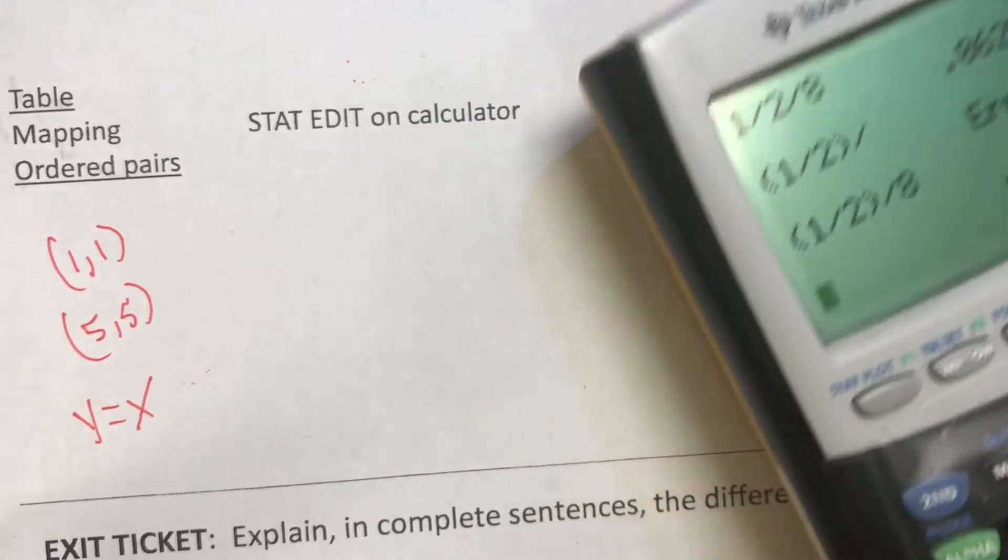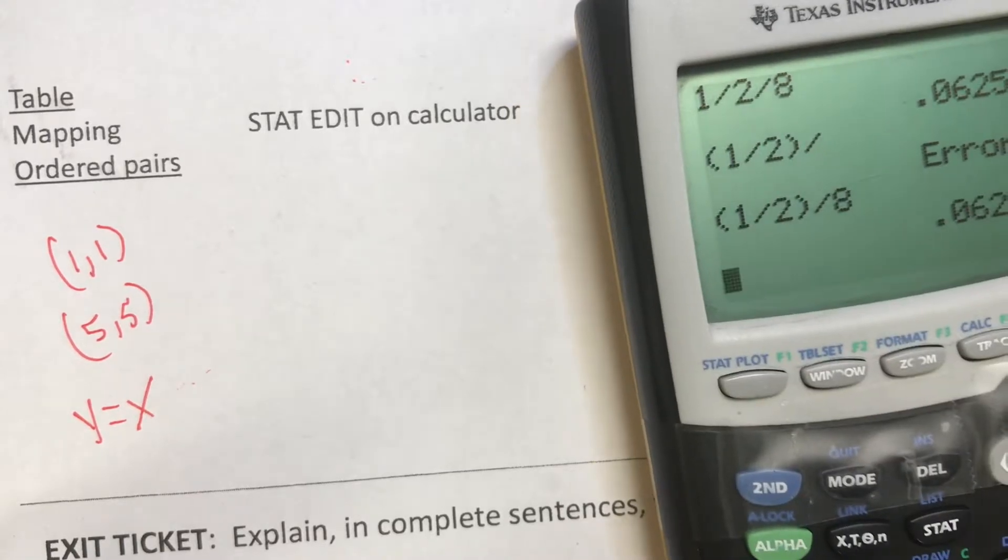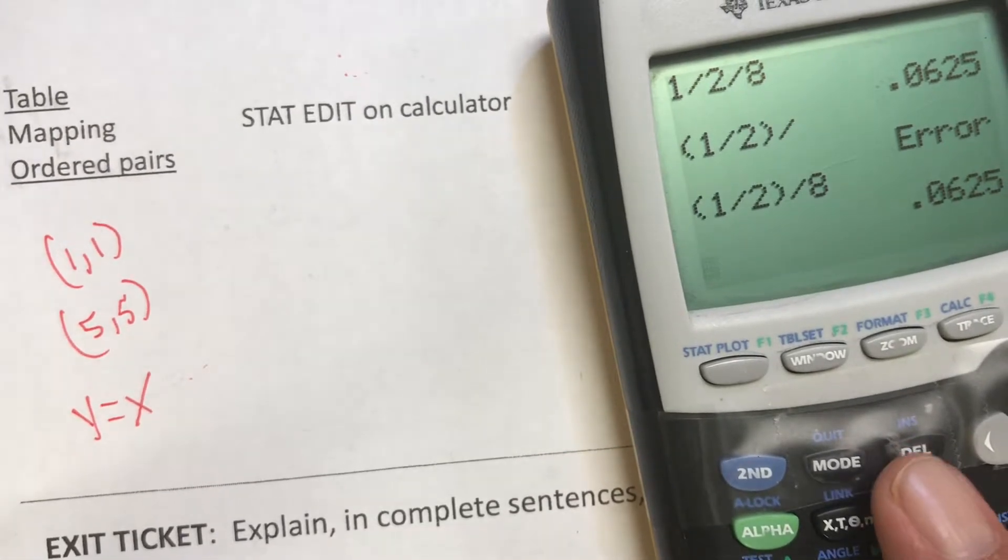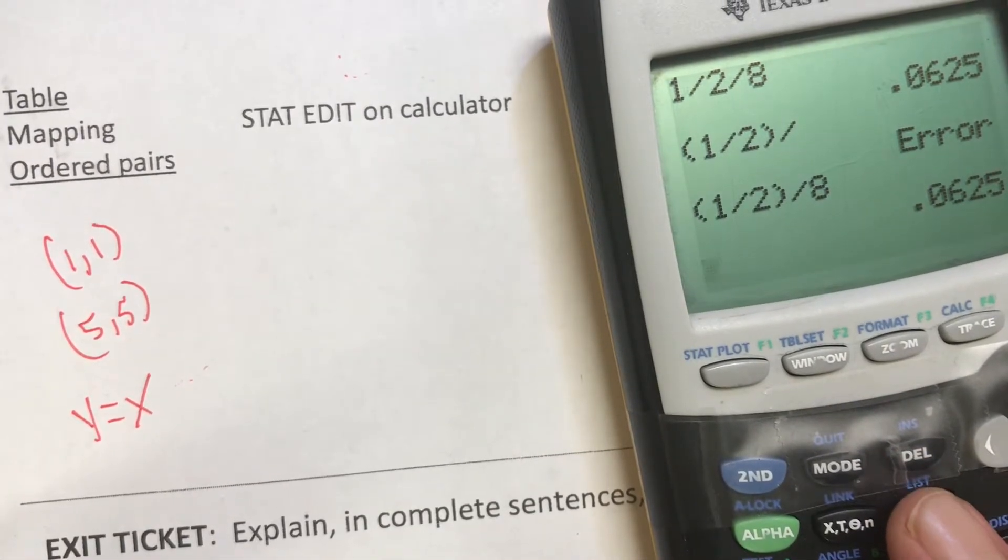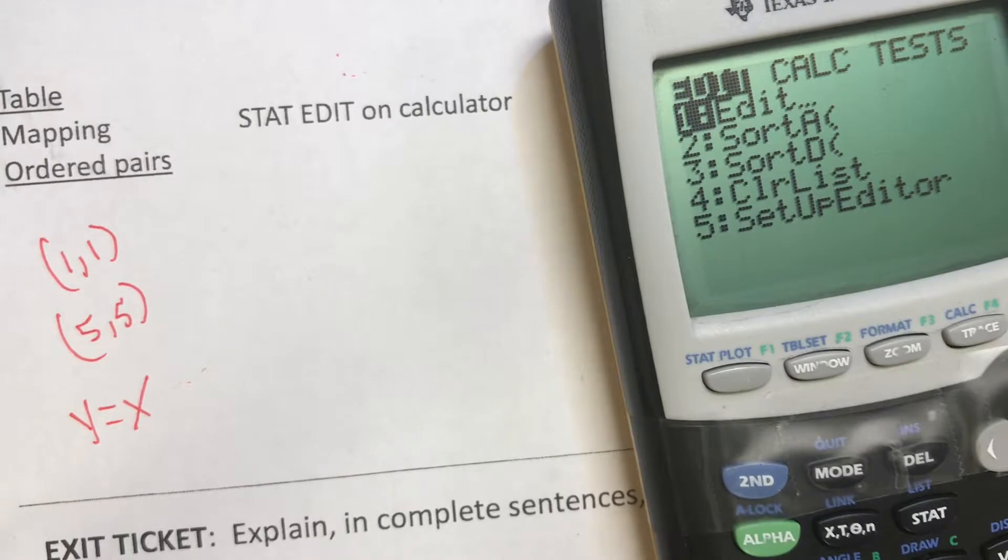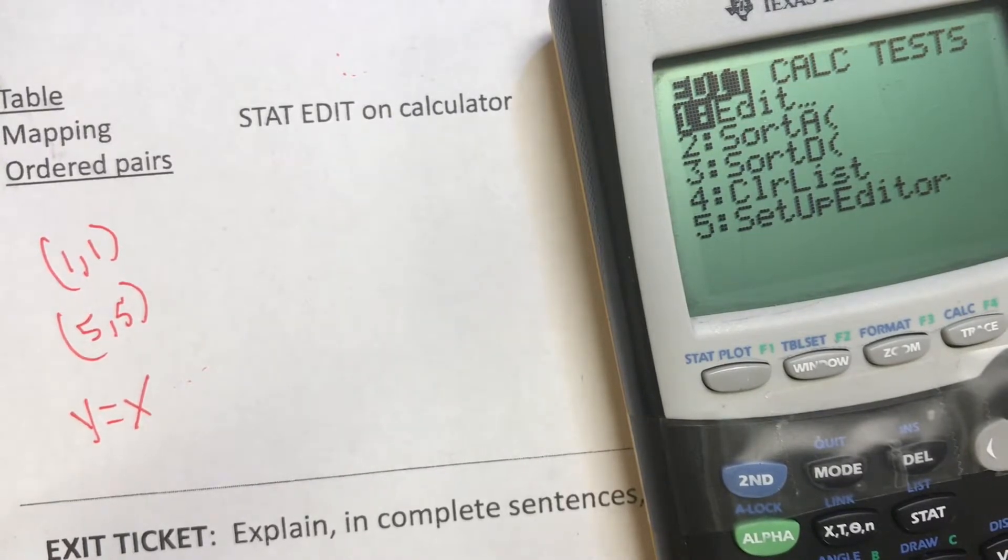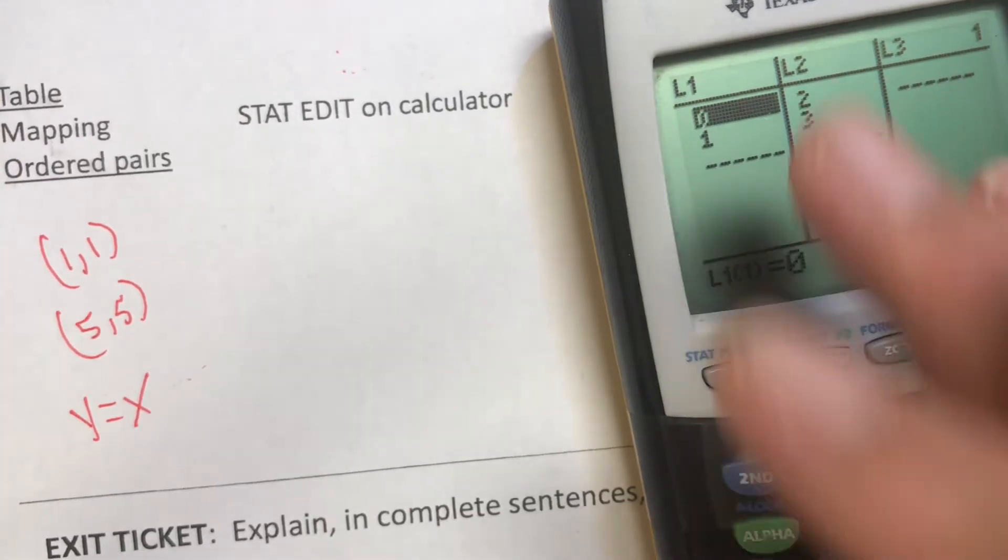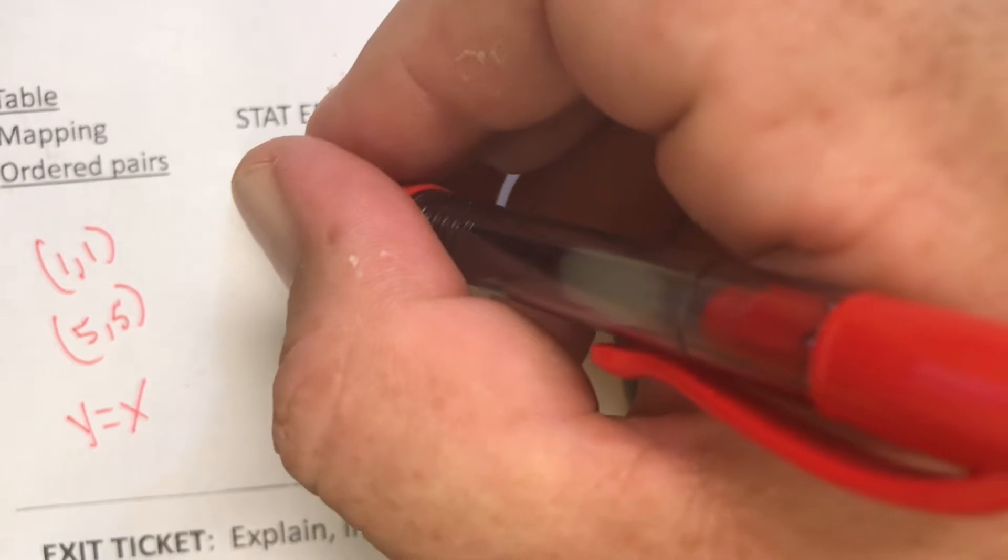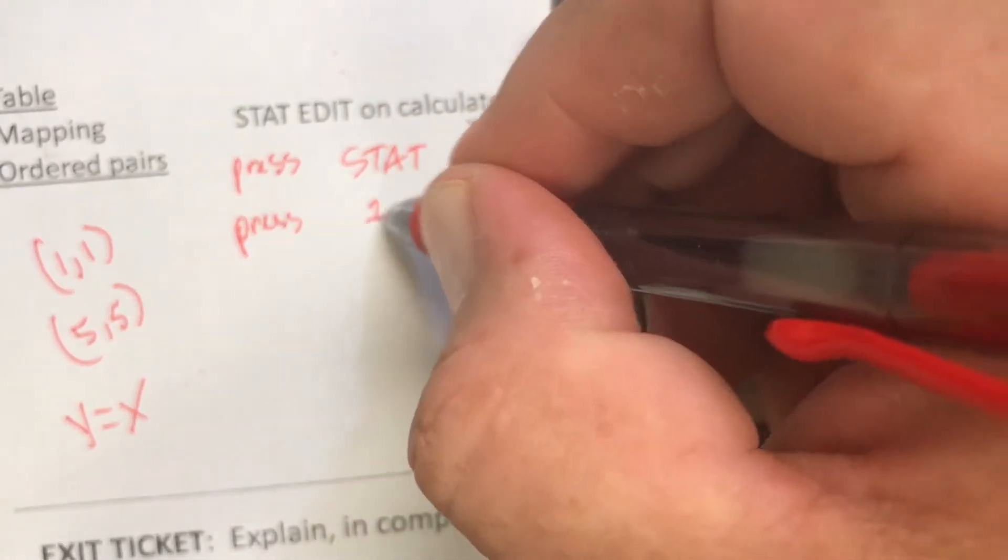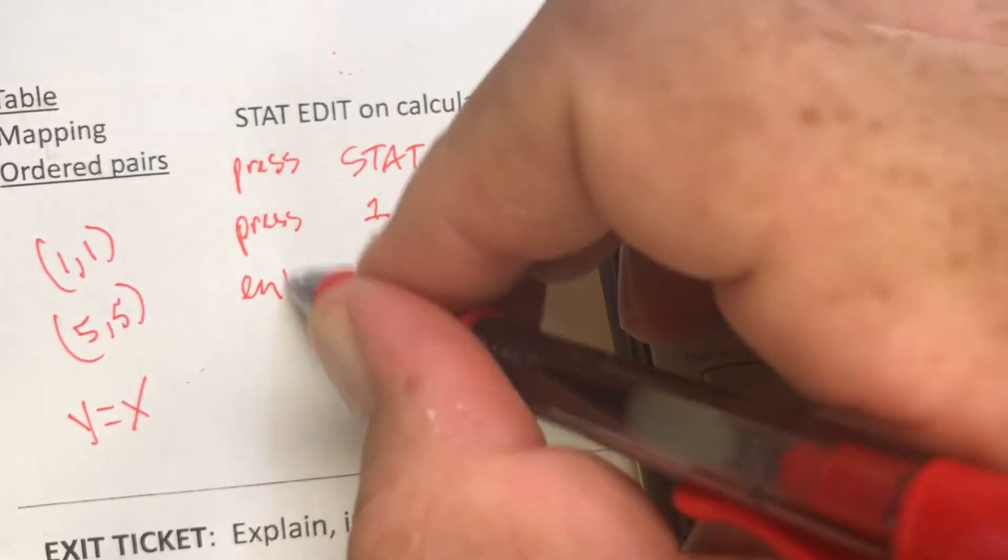In our calculator, we're going to turn our calculator on. We're going to hit the STAT button, which is right underneath the delete. You can see in the bottom corner of the screen. From there we have EDIT, so we'll push 1 for EDIT. Press START, then press 1. Now we're going to enter.